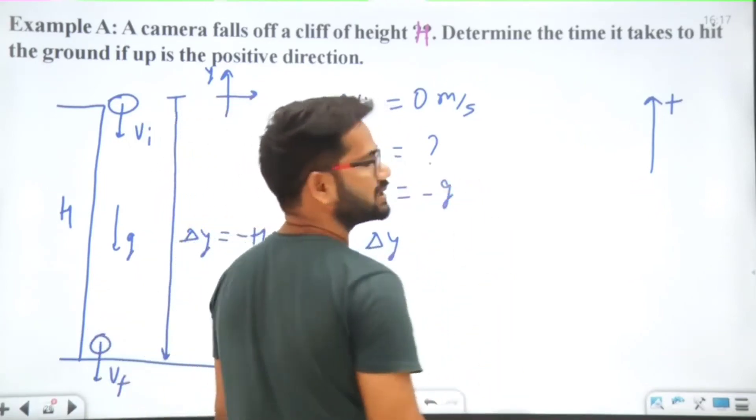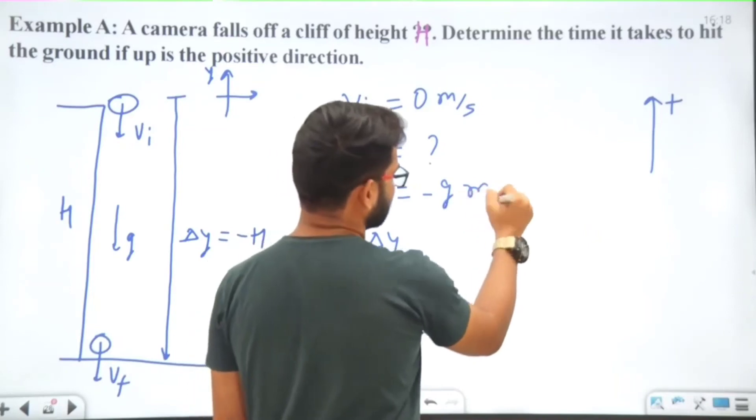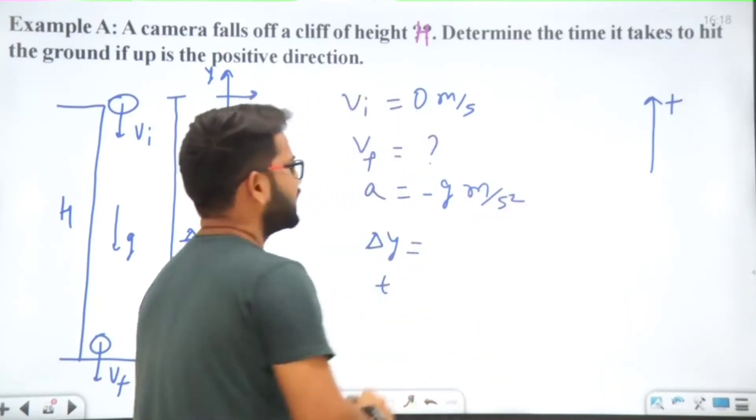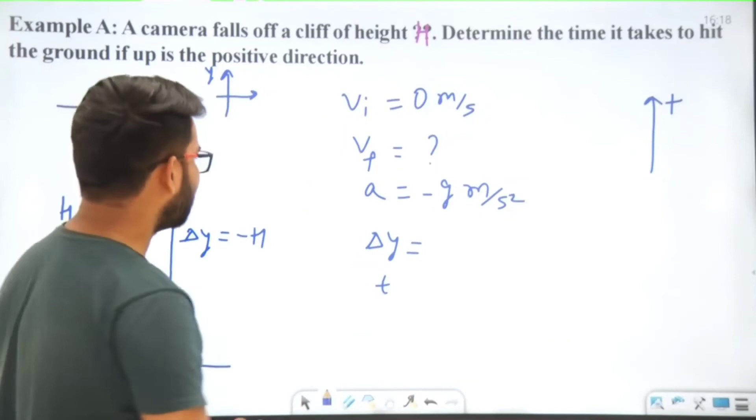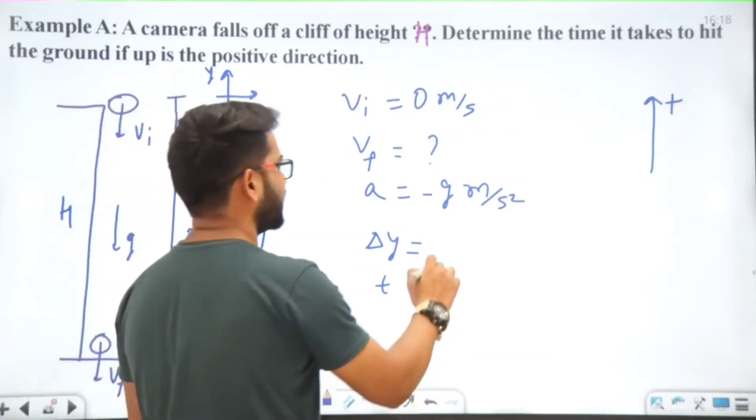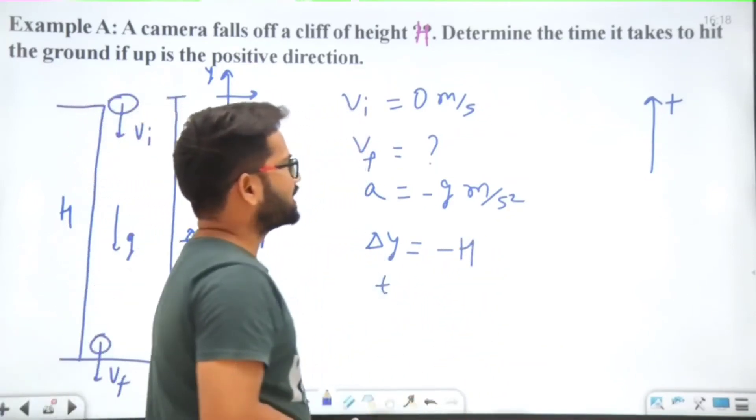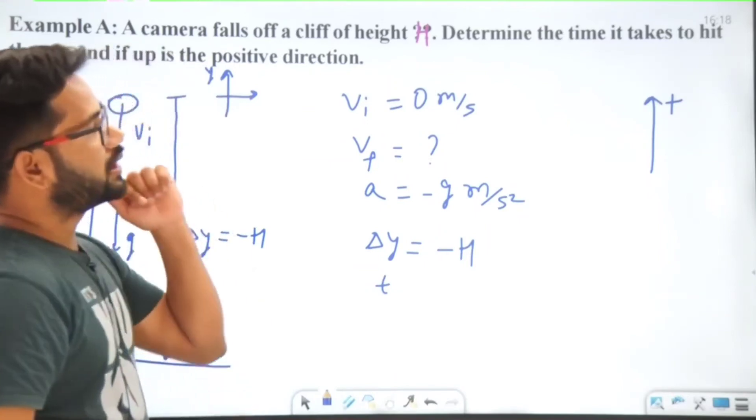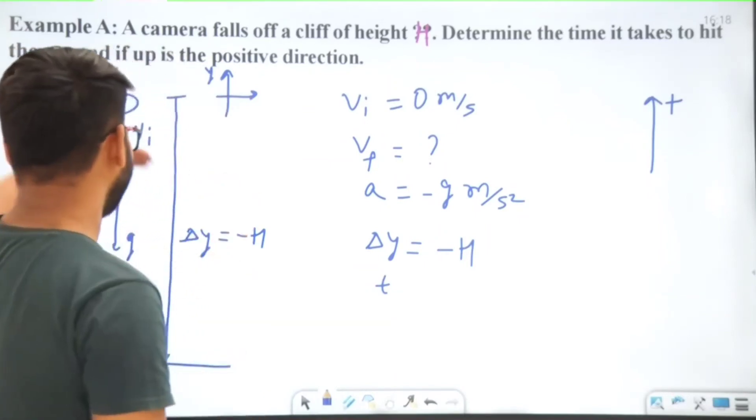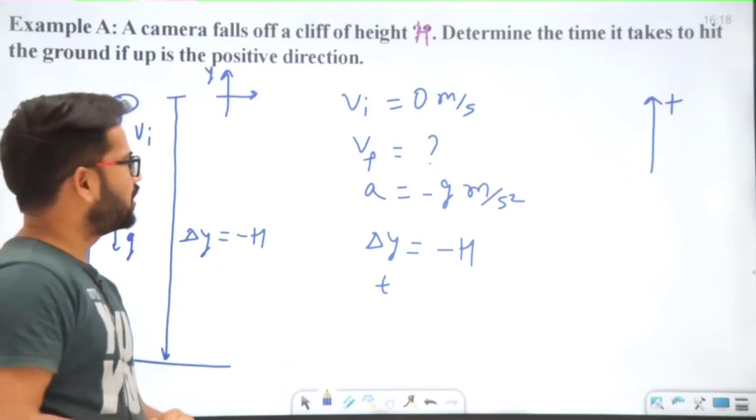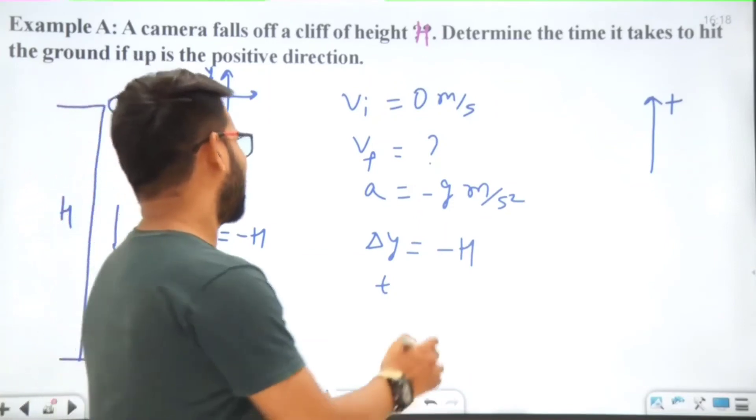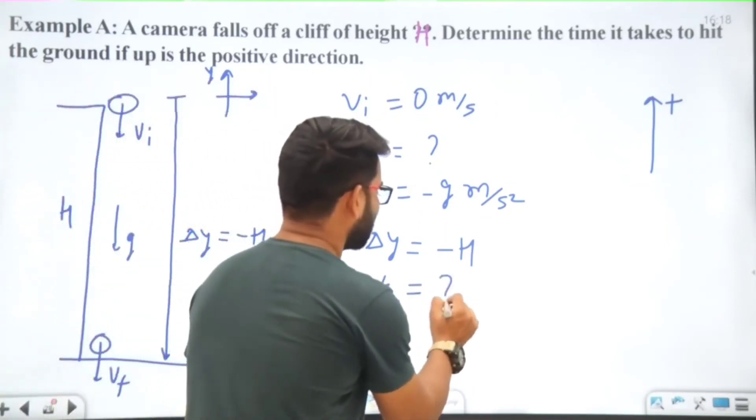The question is, we have to determine the time—how much time will it take to hit the ground. So our unknown is time. It hasn't asked about final velocity, but we can also calculate it. But here our unknown is time.